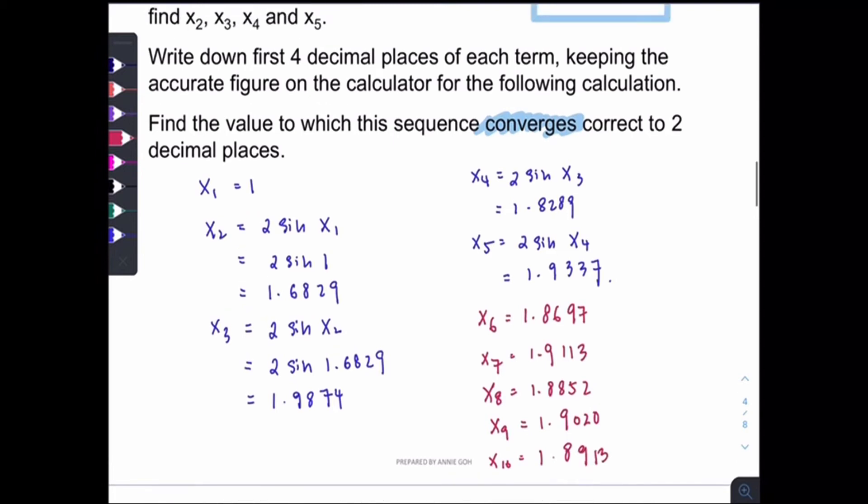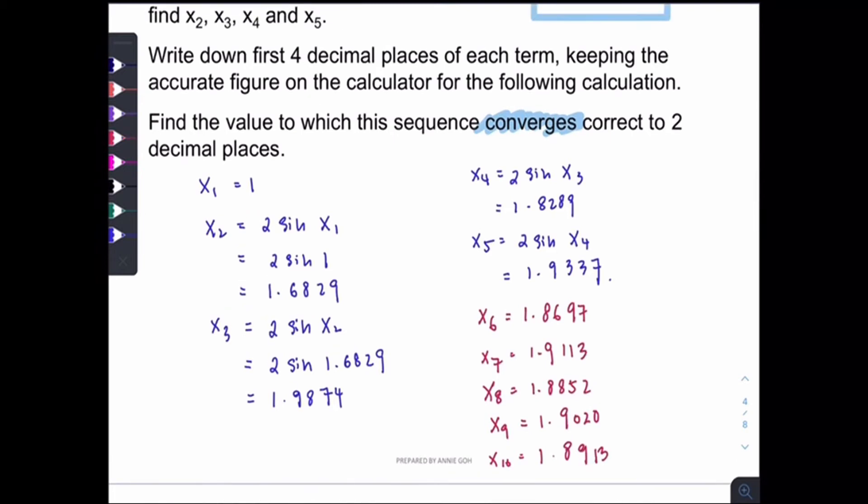How do we know when can we stop? Because the question mentioned that they want the final answer correct to 2 decimal places. So when we have round up this answer correct to 2 decimal places and it's the same, then we can stop. So let's check. For this one, when we round up, it's 1.87. This one is 1.91, different. 1.89 different. 1.90 different. And 1.89 is still different.